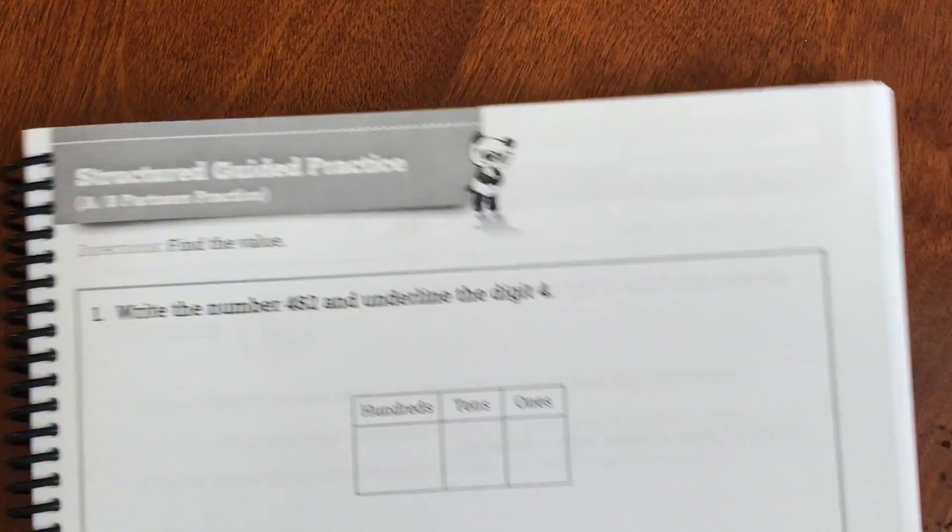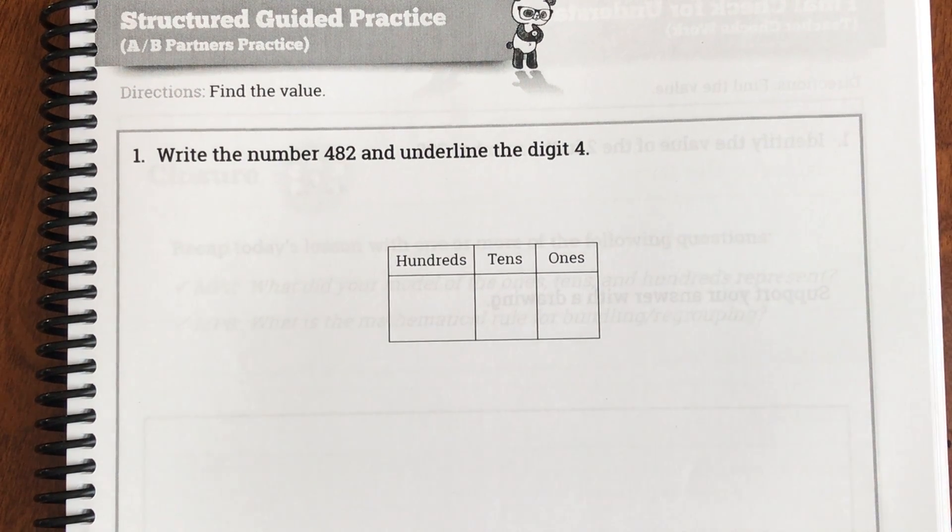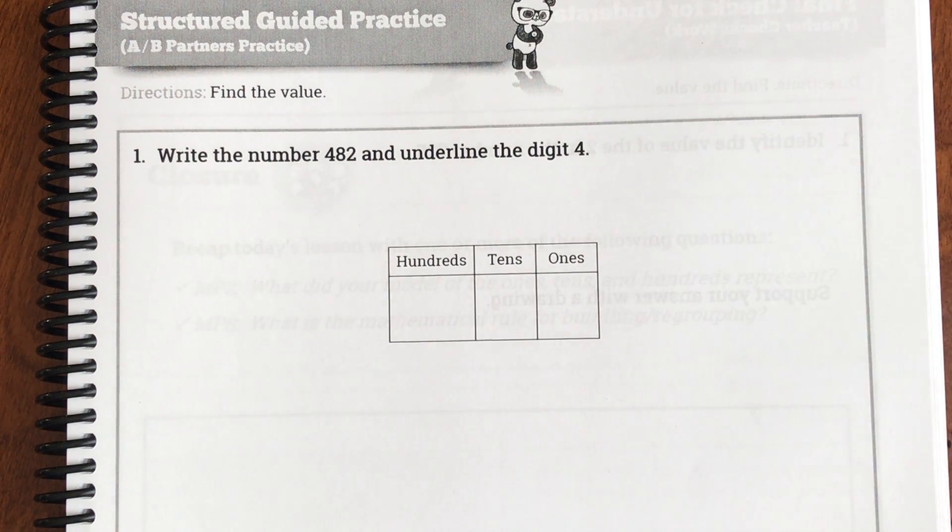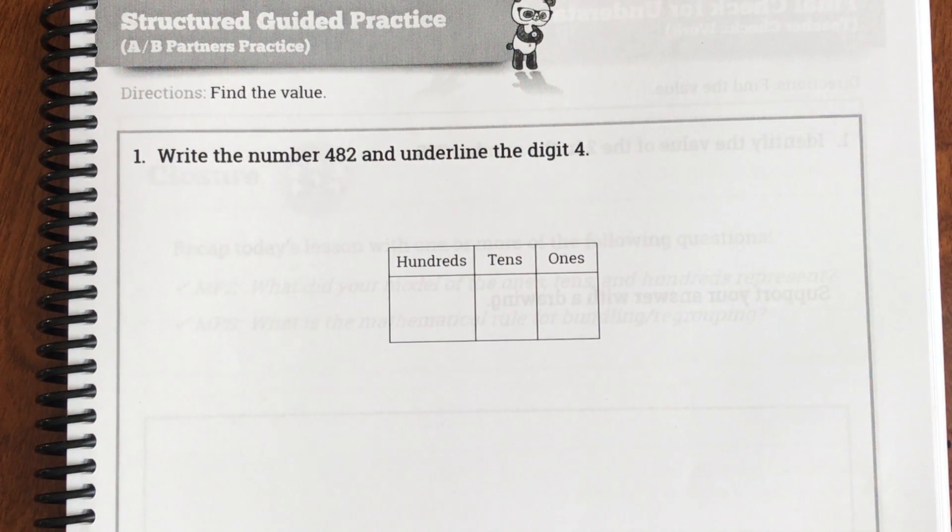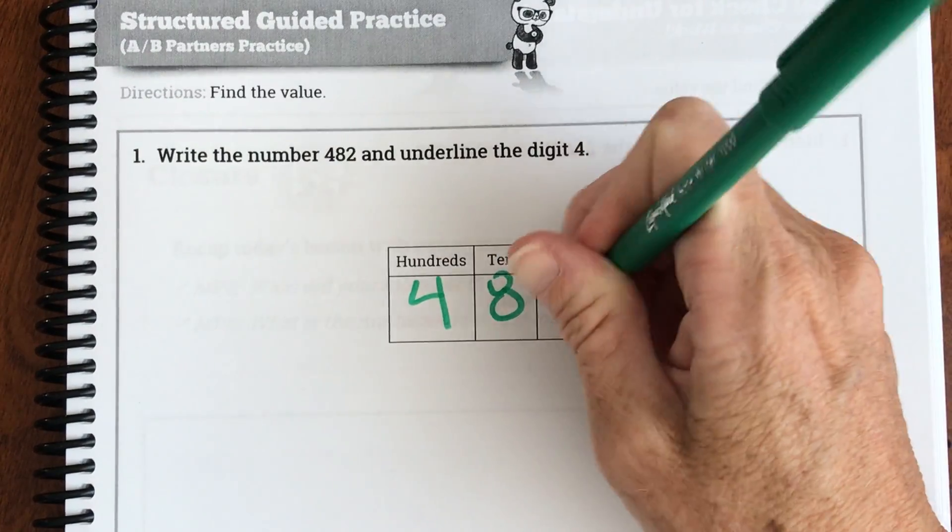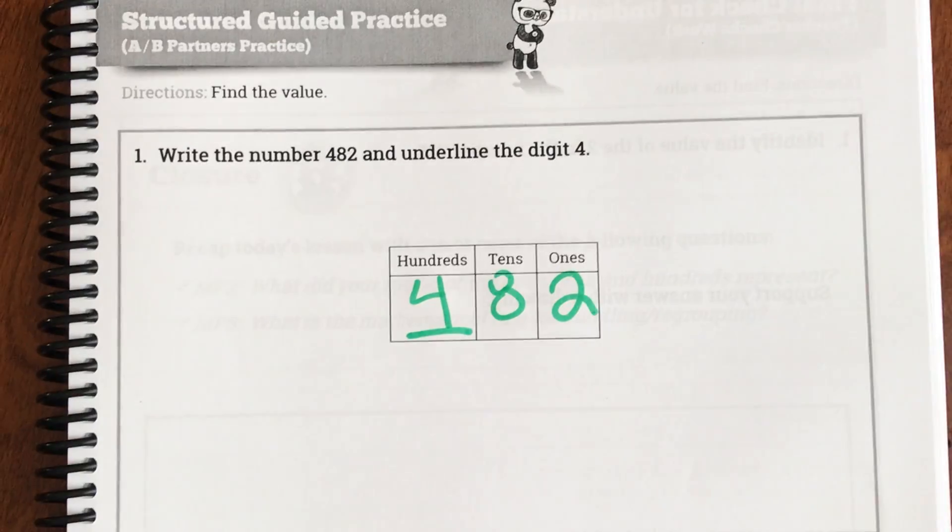Okay let's try some together ladies and gentlemen. You're on page 16 in your student journal. On page 16 in your student journal. And here's our first problem. It says write the number 482 and underline the digit 4. Okay so step one was to make a place value chart. But they already did it for us. So we're just going to take our number and put it in here. So 482. And they want us to underline our 4.